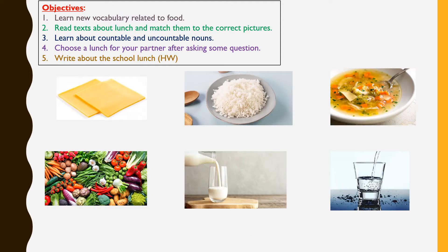Now we are going to start with objective one: learn new vocabulary related to food. Here we can see six pictures. Picture 1: cheese — cheese is one syllable. Next: rice — rice is one syllable. Next: soup — soup is also one syllable.